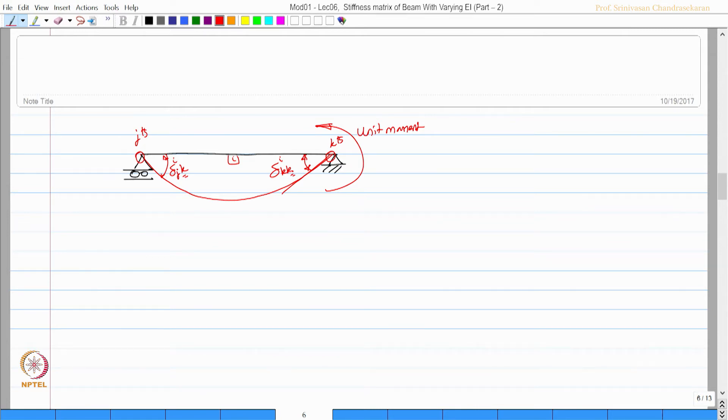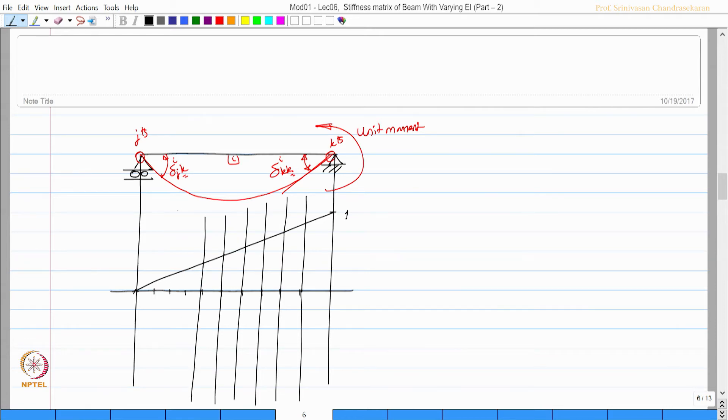Now I am interested in working out these values. So what should I do? Again, divide them into 10 strips. The moment here is 1 and here it is 0, so it is going to vary linearly. I will divide this in 10 pieces.